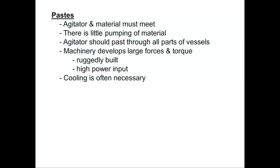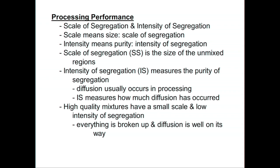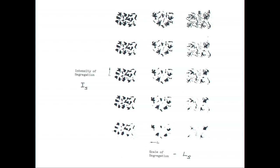An example is putting carbon black into rubber, which requires substantial power input. A Banbury mixer would be a typical device. Since there's such high power input, the material will get hot — there will be a temperature rise due to frictional forces in the fluid, and cooling is often necessary. We should define what mixing is so we have a better idea of what's going on.